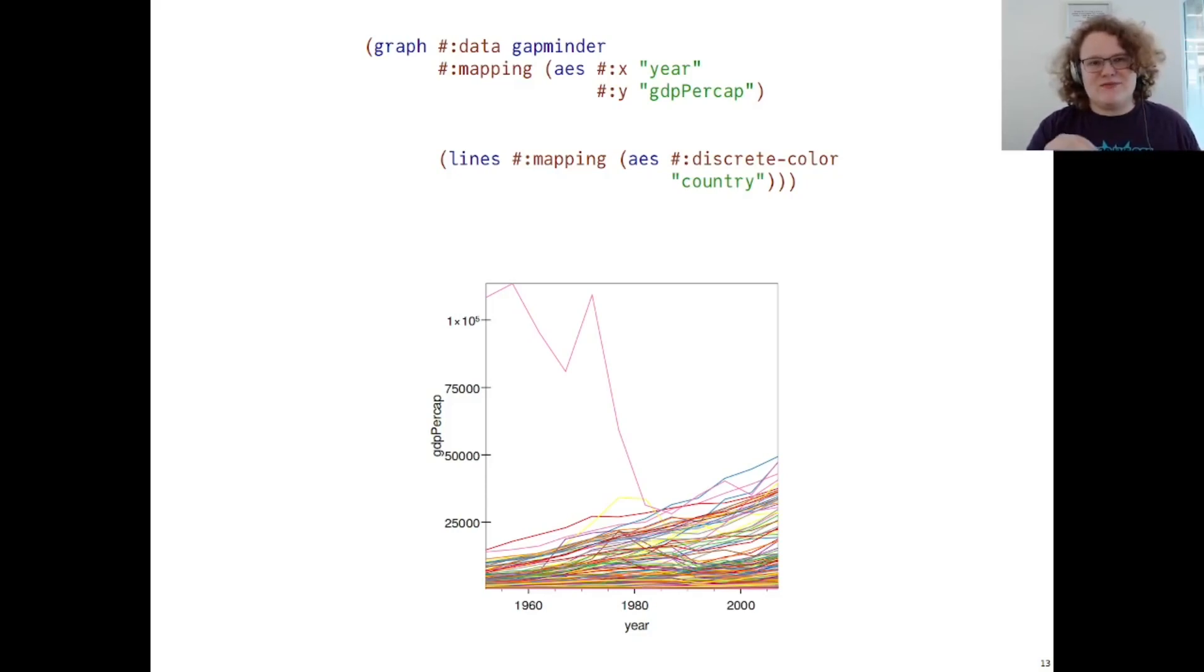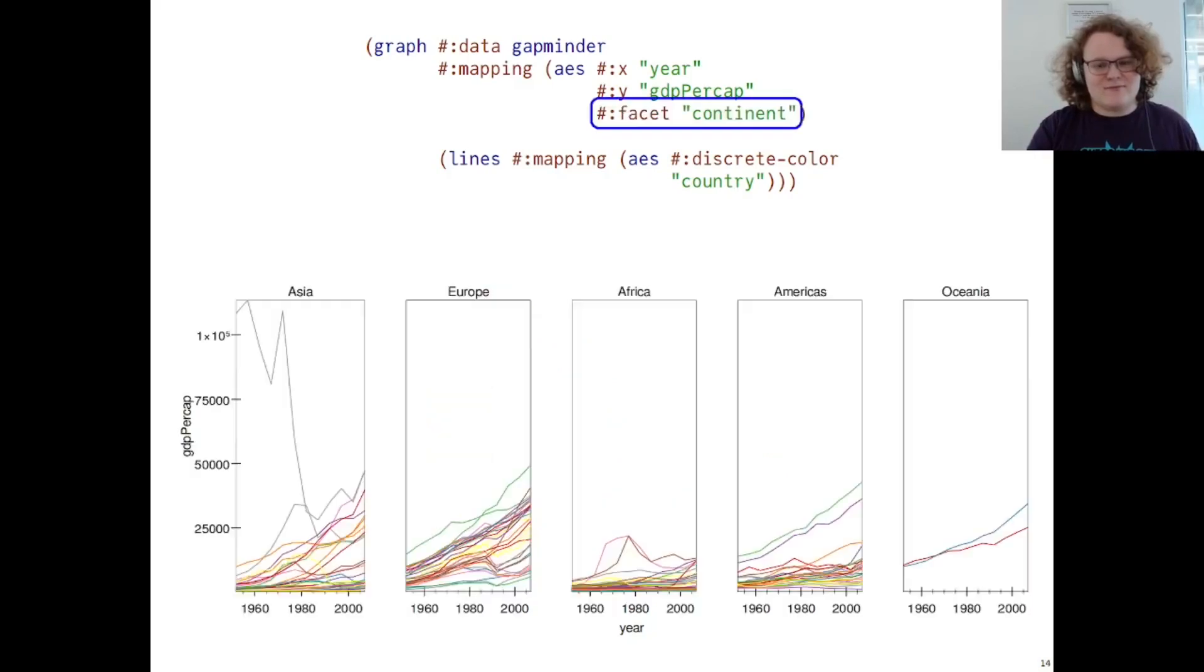So, in order to help clean this up, we have the idea of a facet. If we wanted to observe stuff by continent, we can then facet on the variable continent using the special aesthetic. Here, Graphite splits up the plot into five different subframes, each corresponding to one continent. This is better, and we can make more reasonable observations with it, but it's still a mess.